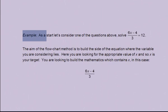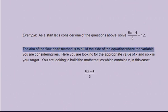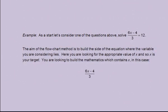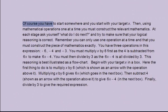It uses the concept of a target which is the variable which you are rearranging for. Here's an example. As a start, let's consider one of the questions above. Solve (6x - 4)/3 = 12. The aim of the flowchart method is to build the side of the equation where the variable you are considering lies. Here you are looking for the appropriate value of x and so x is your target. You are looking to build the mathematics which contains x. In this case, the left hand side, (6x - 4)/3. Of course, you have to start somewhere and you start with your target x.